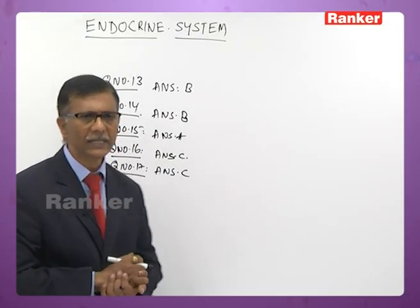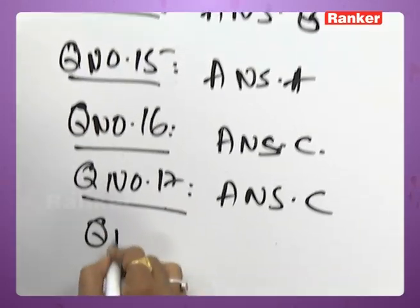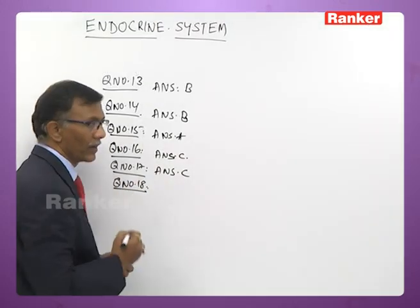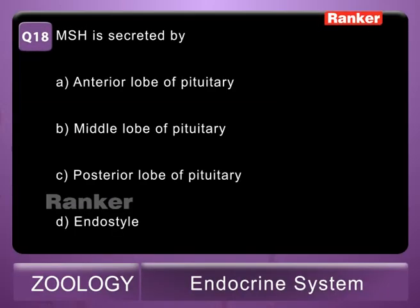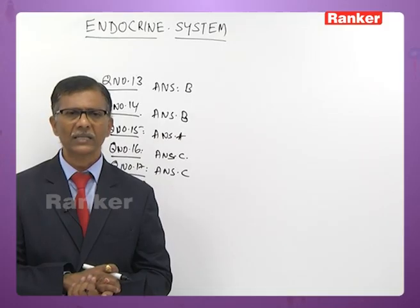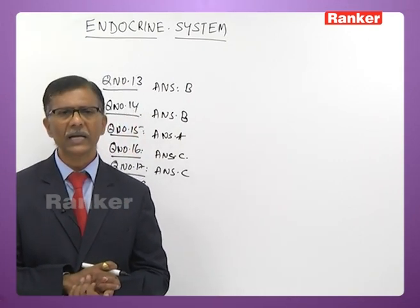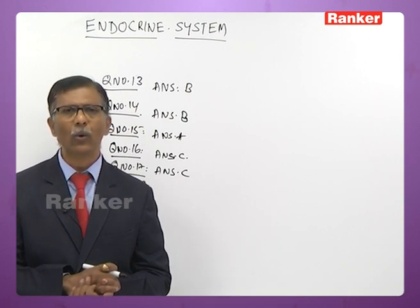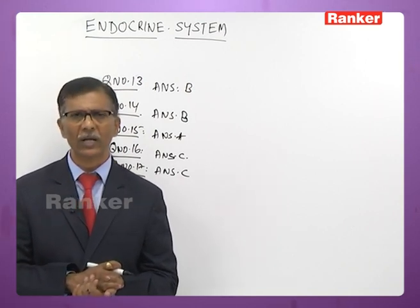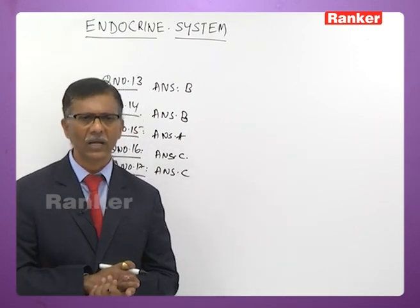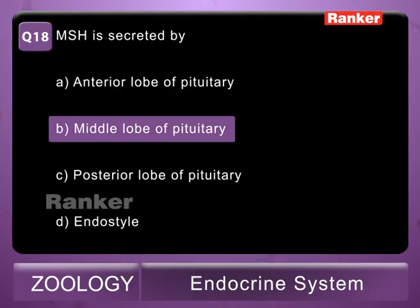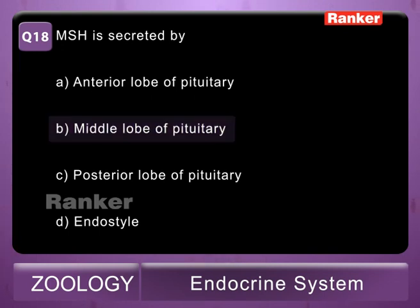Eighteenth question: MSH is secreted by A - anterior lobe of pituitary, B - middle lobe of pituitary, C - posterior lobe of pituitary, D - endostyle. MSH (melanocyte stimulating hormone), also called intermedin, is secreted by the middle lobe (also known as intermediate lobe or pars intermedia) of the pituitary. Eighteenth question answer is B — middle lobe of pituitary.